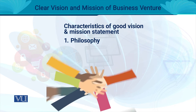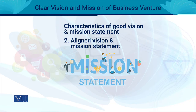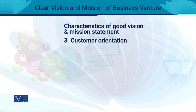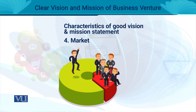Since vision and mission are two separate statements — irrespective of which comes first — it is very important that both are aligned with each other. Your future orientation, i.e., your vision statement, and your mission statement, should not be contradictory to each other. Your vision and mission statement should also reflect customer orientation.